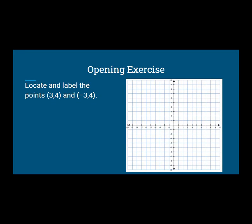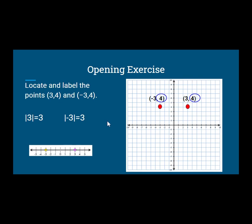Locate and label the points (3, 4) and (-3, 4). What do you notice? Did you notice that they have the same y-coordinates? The x-coordinates have the same absolute value — the absolute value of 3 is 3 and the absolute value of negative 3 is also 3. The x-coordinates are opposite numbers, so the points lie on opposite sides of the y-axis. Both points are 4 units above the x-axis and 3 units away from the y-axis, so the points are symmetric across the y-axis. A reflection across the y-axis takes one point to the other.